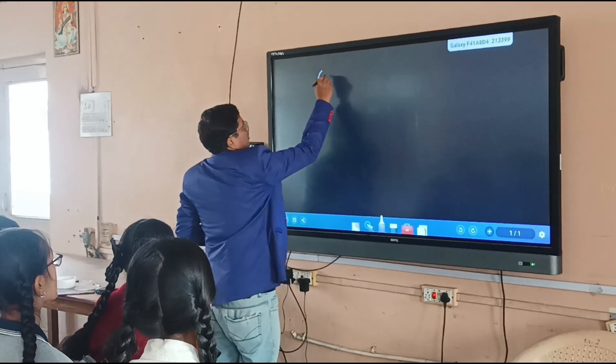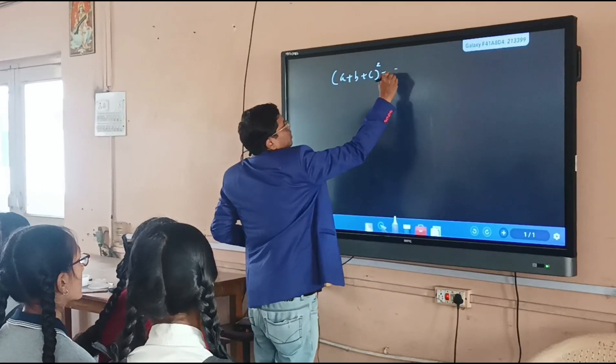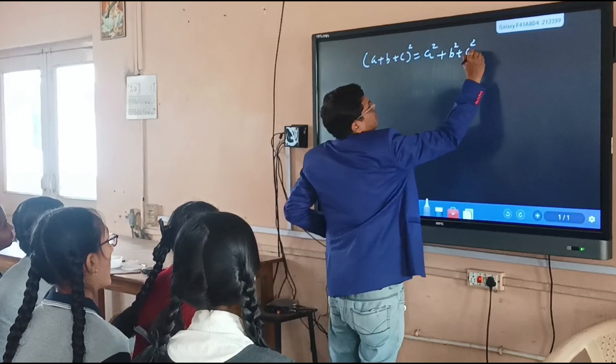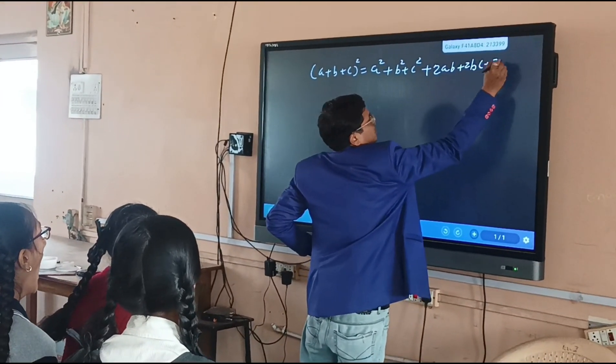That formula is a plus b plus c whole squared equals a squared plus b squared plus c squared plus 2ab plus 2bc plus 2ca.